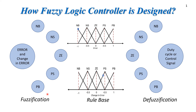So for now, the first stage is fuzzification. What we do is we take our sensors, take the output of our system, and from that output we calculate the error — that is, how far we are from our desired output.